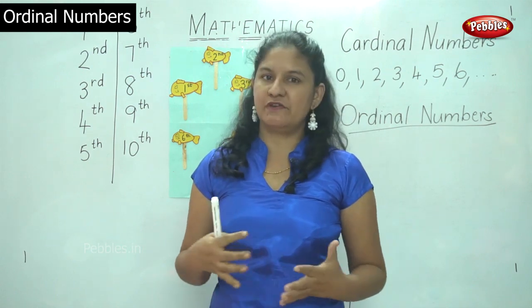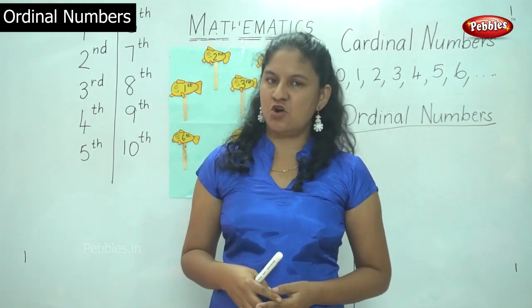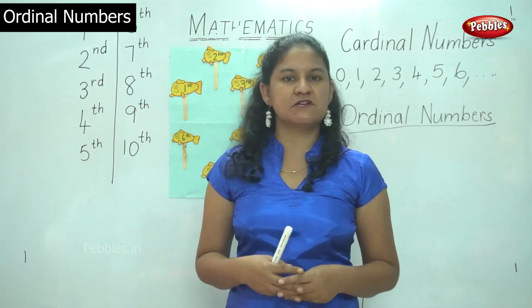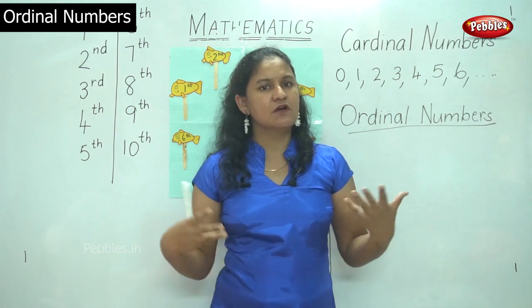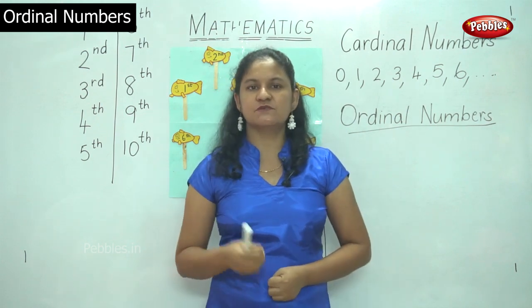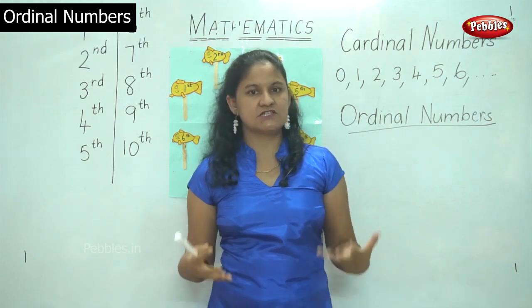Like for example, when we run a race or we play any competitions, we place the person according to the ordinal numbers and not cardinal numbers. So cardinal numbers are the normal numbers that we use when we count, when we do addition or subtraction.